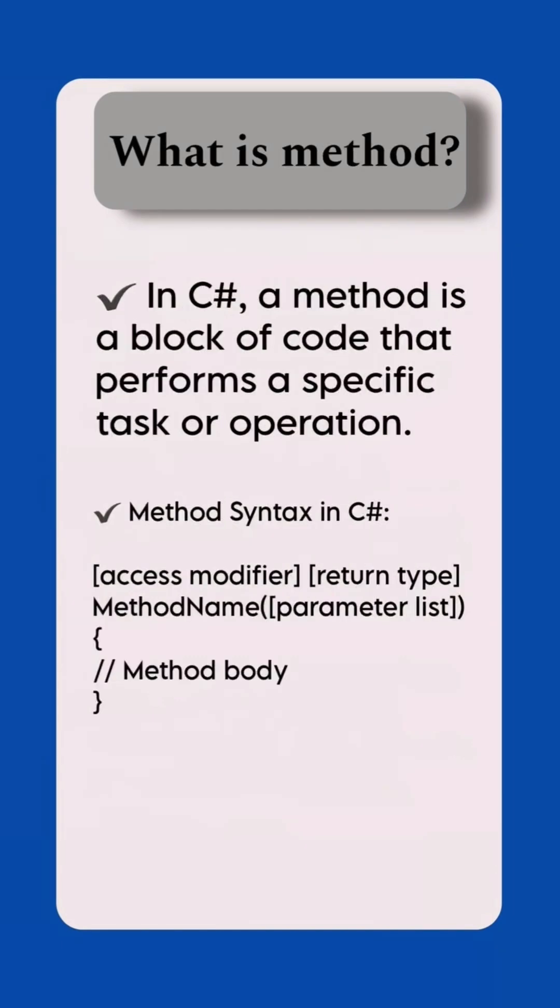What is method? In C#, a method is a block of code that performs a specific task or operation. The method syntax holds an access modifier, return type, and then the method name with parameter list, followed by a method body.